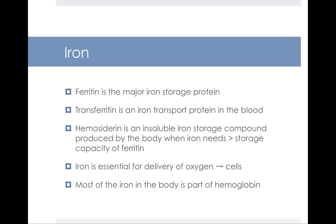Ferritin is the major iron storage protein, whereas transferrin is an iron transport protein found in your blood. Hemosiderin refers to an insoluble iron storage compound that's produced by the body when your iron needs exceed the storage capacity of ferritin.